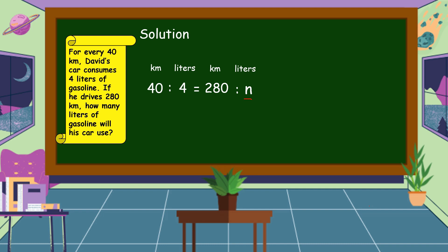Then we're going to multiply the extremes. 40 times N is equal to 40N. Then we're going to multiply also the means. 4 times 280 is equal to 1,120.